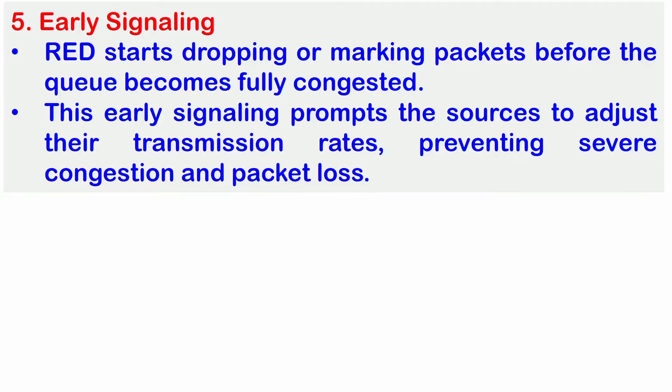Early Signaling: RED starts dropping or marking packets before the queue becomes fully congested. This early signaling prompts the sources to adjust their transmission rates, preventing severe congestion and packet loss. By dropping or marking packets early, RED prompts sources to adjust transmission rates, preventing severe congestion and packet loss.